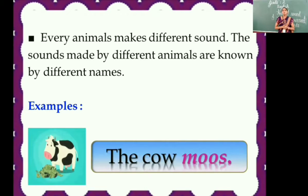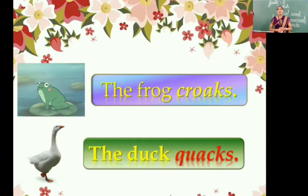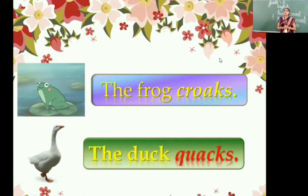For example, here you can see there is a picture of a cow. The sound that the cow makes is known as moos — M-double-O-S. Another example: this is a picture of a frog. What is the sound made by the frog? Croaks — C-R-O-A-K-S. Another picture is of a duck. How does the duck make the sound? Quacks — Q-U-A-C-K-S.